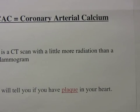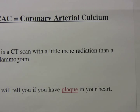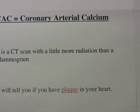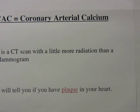Step 2: get a CAT scan of your heart. It is about the same amount of radiation as a mammogram, so if you get it once and first, there is very little risk from radiation. It is called a coronary artery calcium, or CAC. This tells you your calcium score. If you have a calcium score of one or greater, then you have plaque in your coronary arteries.